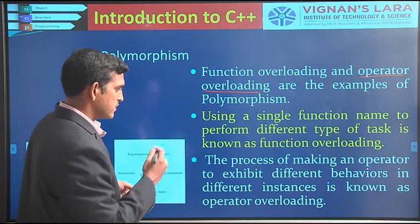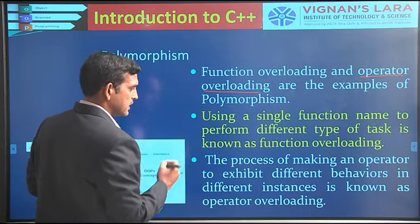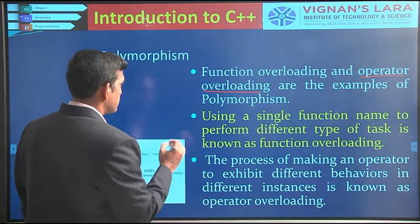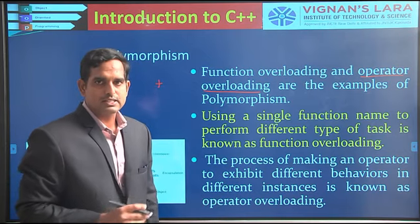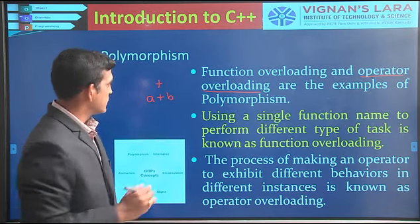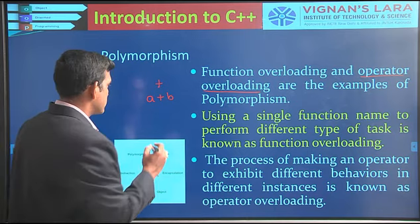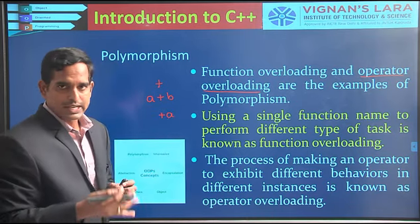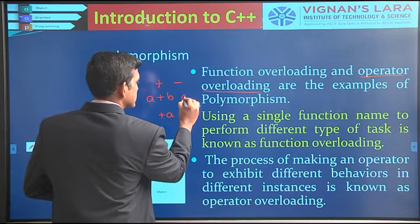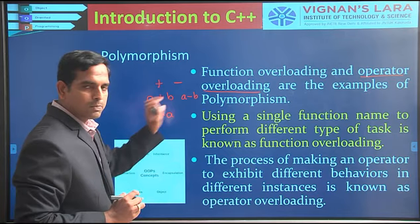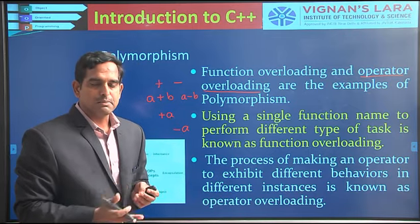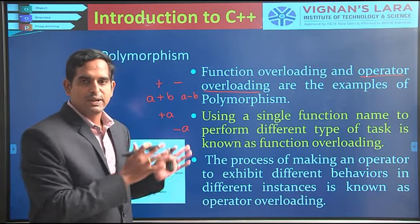In C language you can see operator overloading indirectly. For example, the plus sign implements addition when used with two operands, but implements a positive sign when used with a single operand. The same is true for minus — with two operands it performs subtraction, but with a single operand it implements the negative sign. In C++ you can make any operator perform different types of operations in different instances.